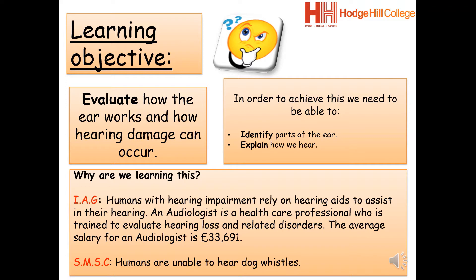Our learning objective today is to evaluate how the ear works and how hearing damage can occur — identifying parts of the ear and explaining how we hear. For the IAG segment: humans with hearing impairment rely on hearing aids; an audiologist is a healthcare professional trained to evaluate hearing loss, with an average salary of £33,691. Lots of people have hearing difficulties — myself included. I have tinnitus from listening to too much music, so I have a constant ringing sound in my ears.